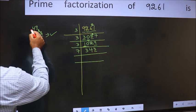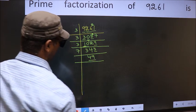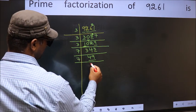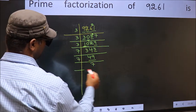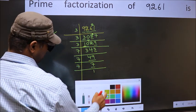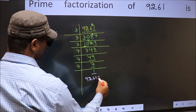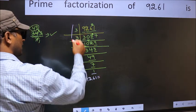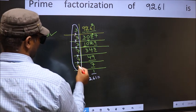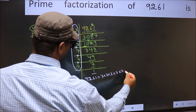So 7 goes here and we write 49. Now we have 49 — always remember 7 times 7 is 49. So dividing again by 7 gives 7. Since 7 is a prime number, 7 times 1 is 7 and we get 1. So the prime factorization of 9261 is the product of these numbers: 3 x 3 x 3 x 3 x 7 x 7 x 7.